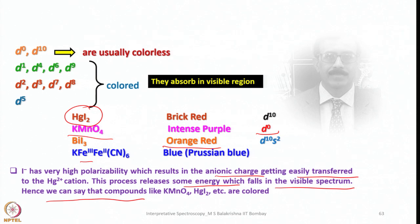Iodide has very high polarizability, which results in anionic charge being easily transferred to the Hg²⁺ cation. This process releases energy which falls in the visible spectrum — hence compounds like MnO₄⁻ and HgI₂ are colored. This is a charge transfer transition. For d10 systems it is metal-to-ligand charge transfer (MLCT); for KMnO₄ with d0 it is ligand-to-metal charge transfer (LMCT); and for Prussian blue with Fe³⁺ and Fe²⁺ it is metal-to-metal charge transfer (MMCT). These charge transfer transitions are responsible for the intense colors in these compounds.